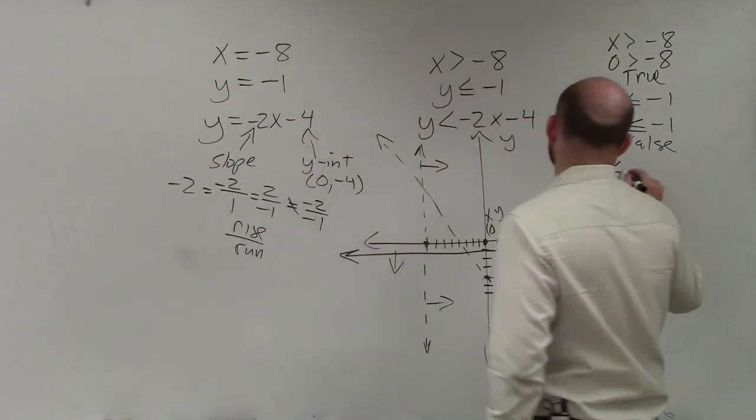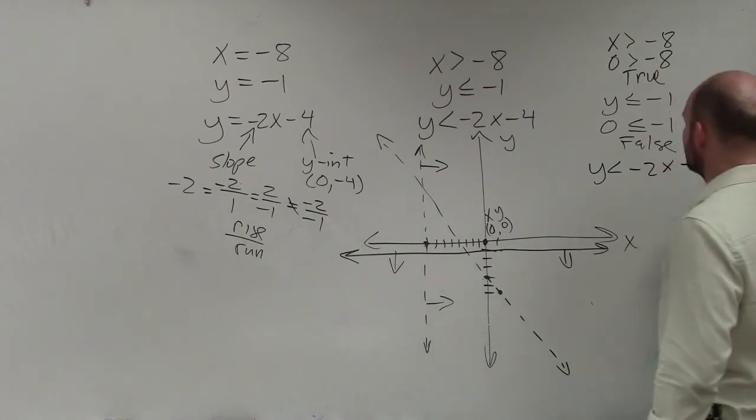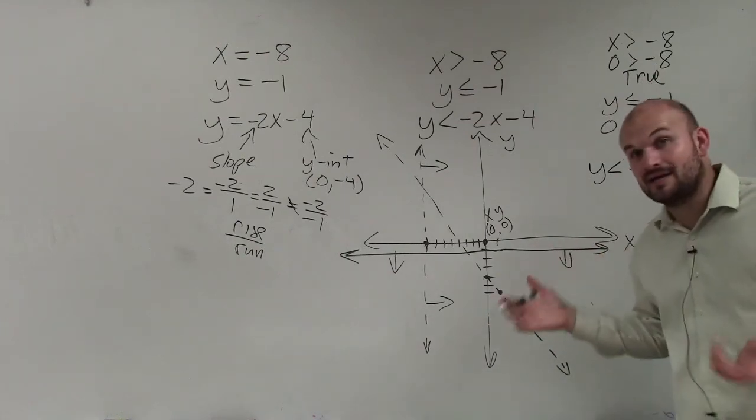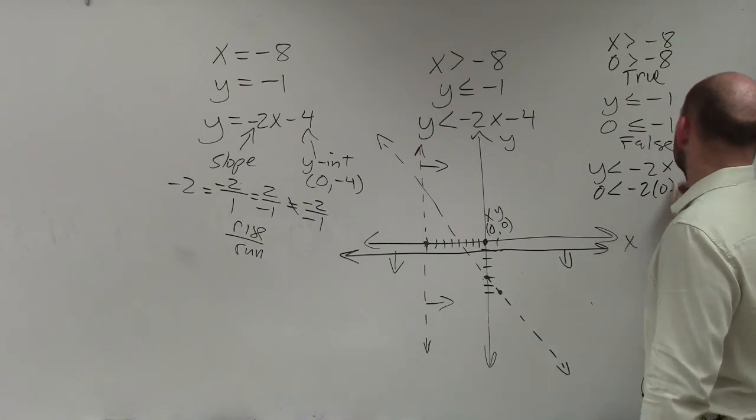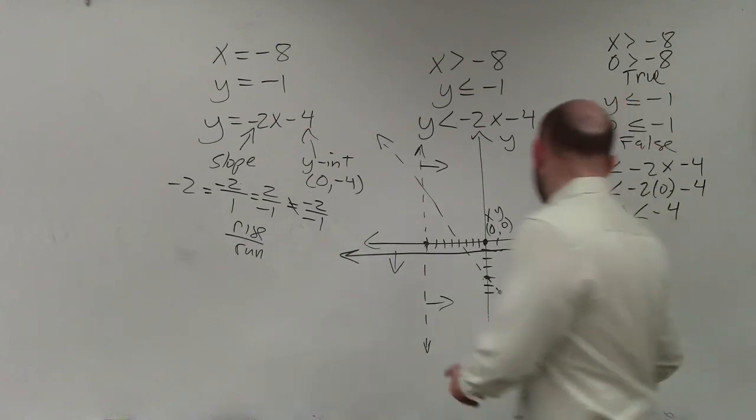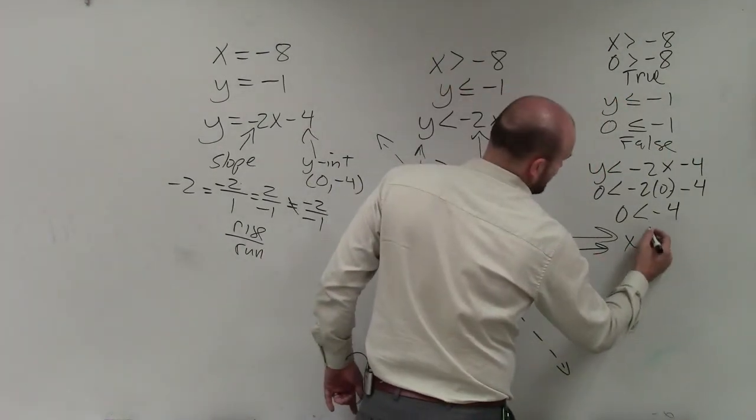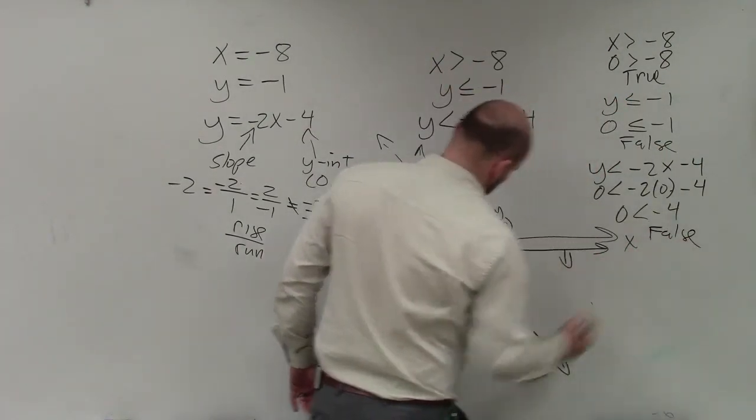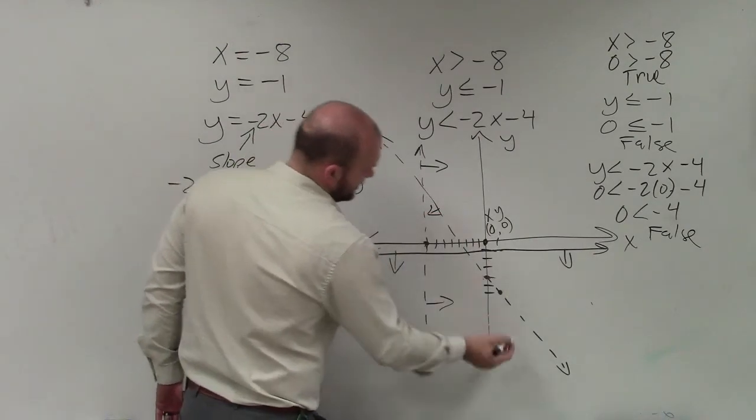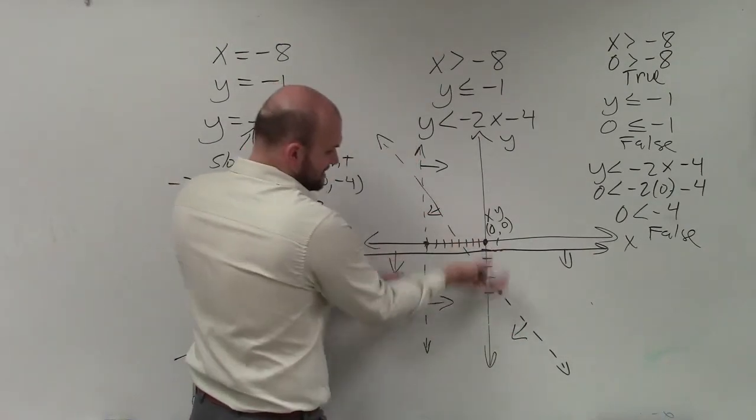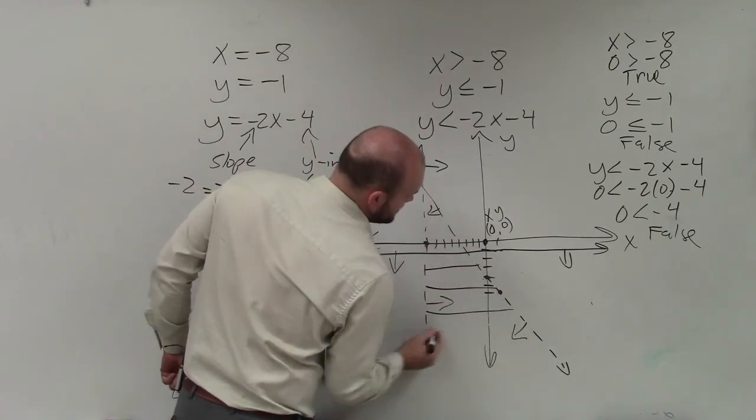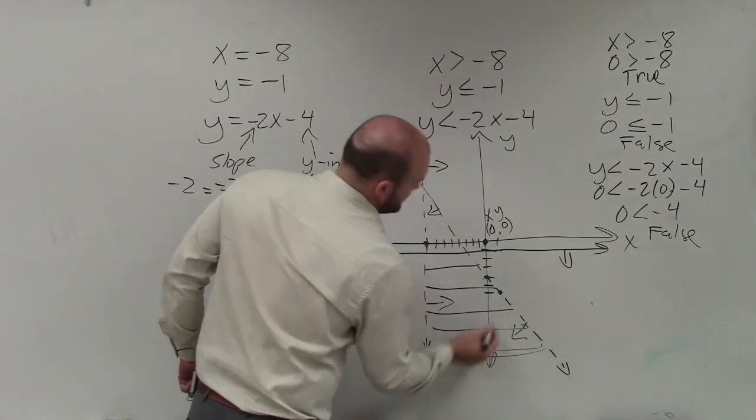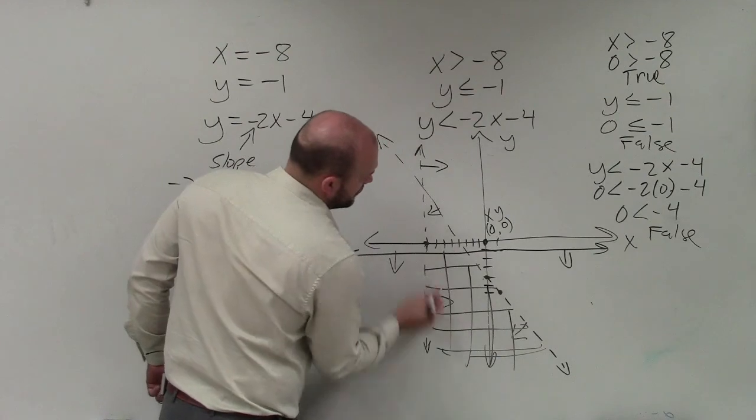Last one I'll do is y is less than negative 2x minus 4. Now I have an x and a y I can plug in. So I'll plug a 0 in for y, 0 in for x. And I have 0 is less than negative 4. So for this line, that is false. So therefore, again, I am going to be shading away. So by going down to the right and below, you can see that my feasible region is going to be this area right here.